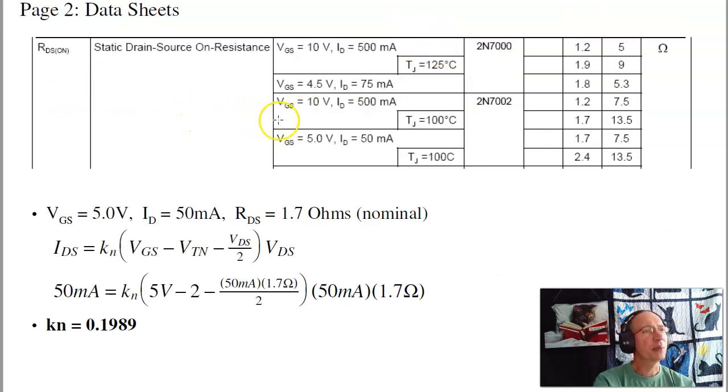If we go to page two of the data sheets, this will tell you what the resistance is under different conditions. If I pick one of these conditions, similar to how I'll be using it, at 5 volts, 50 milliamps, only need 20 milliamps, but that'll be close. The resistance is right around 1.7 ohms nominal. That tells me K sub N. This is the ohmic region. Again, kind of the ohms tells you ohmic.